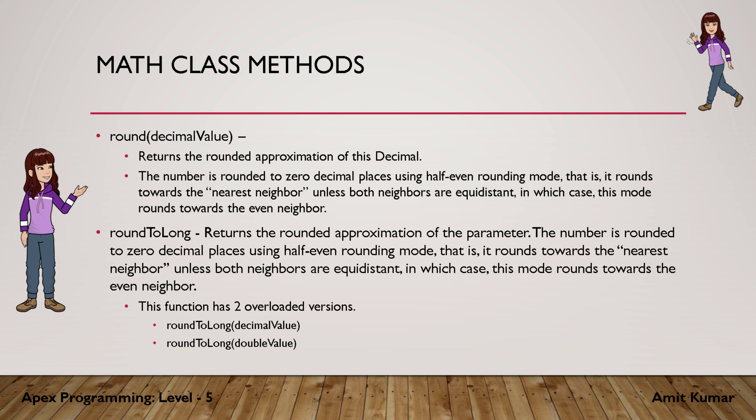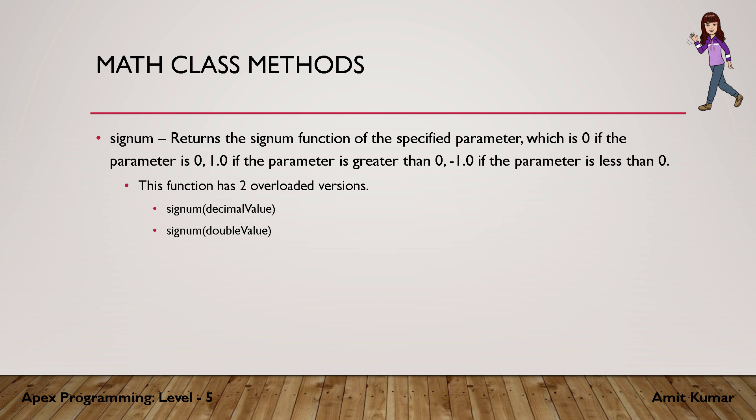Half-even rounding means it rounds towards the nearest neighbor unless both neighbors are equidistant. For 3.3 the nearest neighbor is 3, for 3.7 it is 4. But when neighbors are equidistant — for example 3.5 — it returns the even neighbor: 3.5 returns 4, and 4.5 also returns 4, because 5 is an odd neighbor.